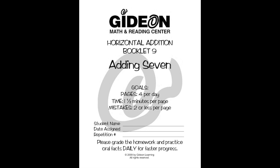This is Horizontal Edition 9, where you will learn to add 7. In this book, you will do 4 pages per day. Your goal is to do all 4 pages in 6 minutes or less with 8 mistakes or less.